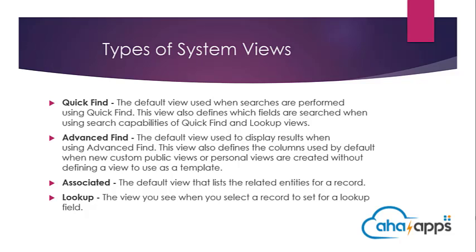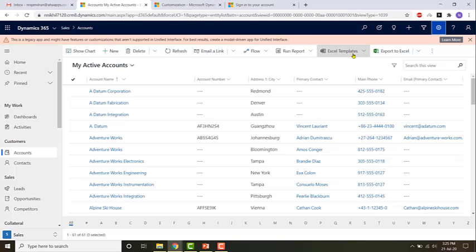In the previous video we looked at what a system view is. In this video we look at the quick find system view. The quick find view is a default view which is used when searches are performed using quick find. Using this view we can also define what fields are searched using the search capabilities of the quick find and lookup fields.